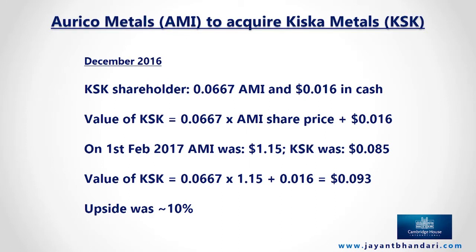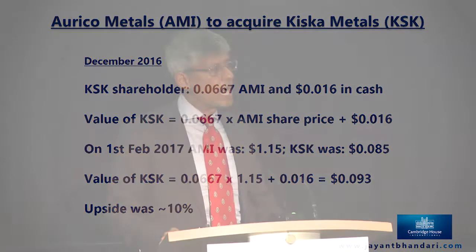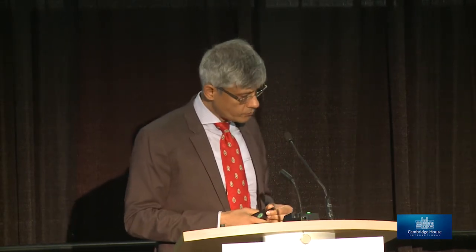Let me briefly talk about a couple more companies that no longer exist. Orico Metals was acquiring a company called Kiska Metals, and all you had to do was simple math to see there was as much as 10 to 15% arbitrage in owning Kiska while the deal was going through its merger. Orico was offering 0.0667 shares of Orico per share of Kiska, plus a cash component. Multiplying that with the share price showed the 10 to 15% arbitrage upside.